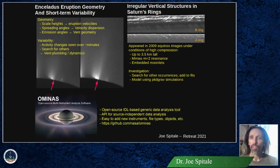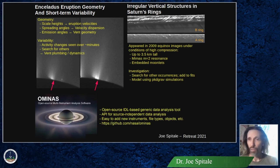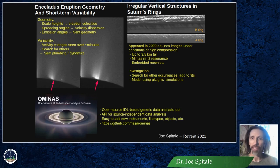During the 2009 equinox at Saturn, we observed irregular vertical structures in Saturn's rings. We would now like to do a survey for any more of these structures, and we're modeling them using PKDGRAV.